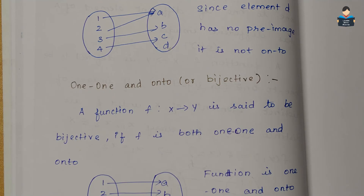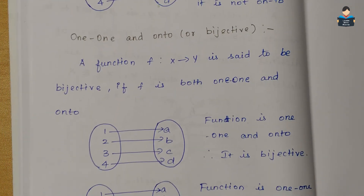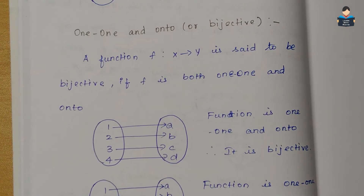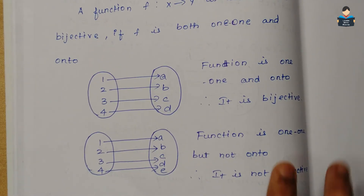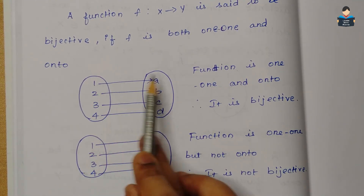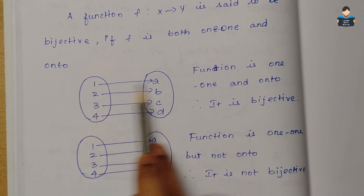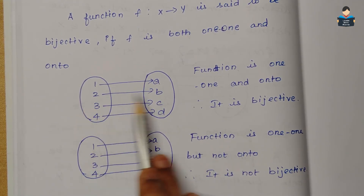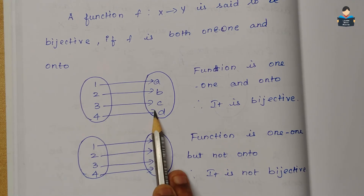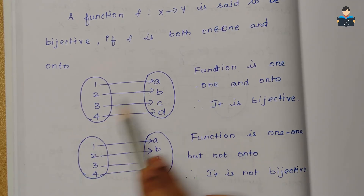Now let's look at the example of 1-to-1 and onto. Here: 1 maps to a, 2 maps to b, 3 maps to c, 4 maps to d. Each element has a unique map, making this a bijective function.